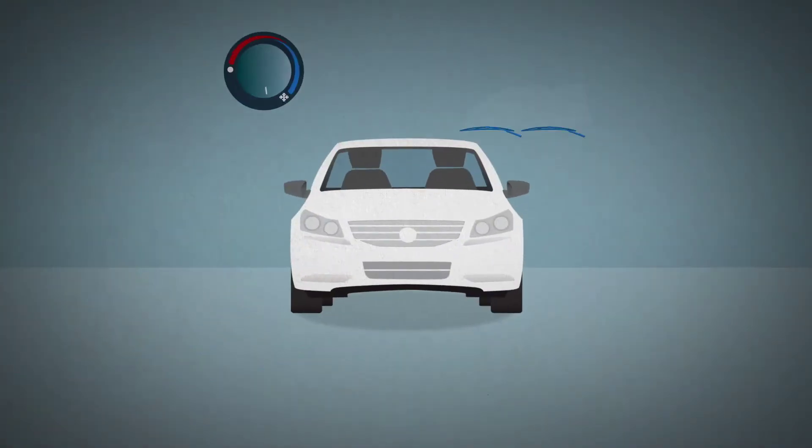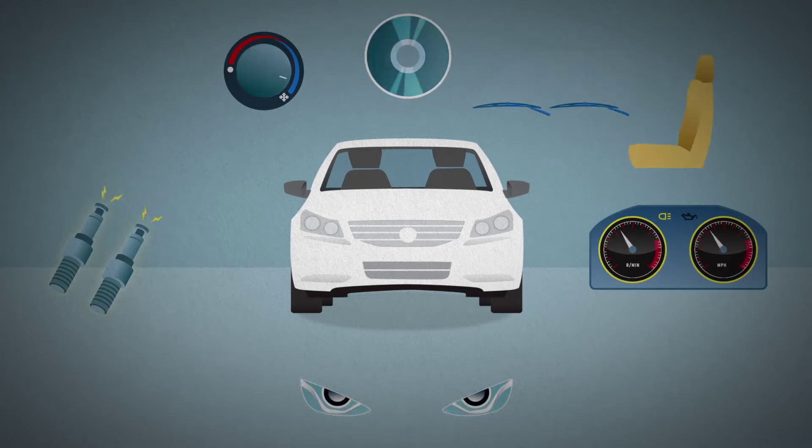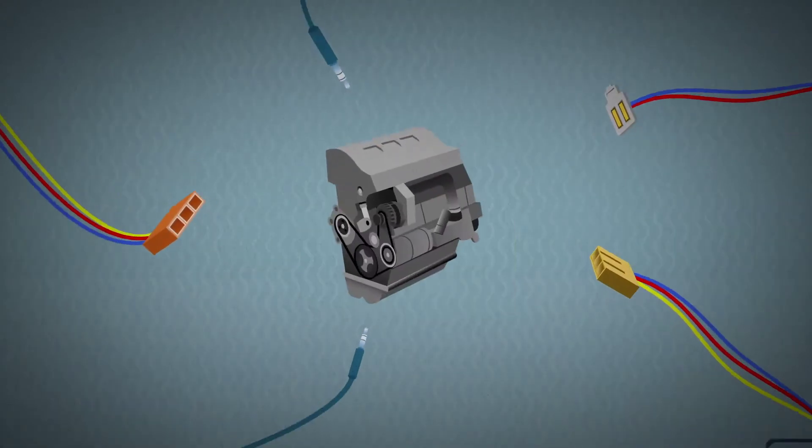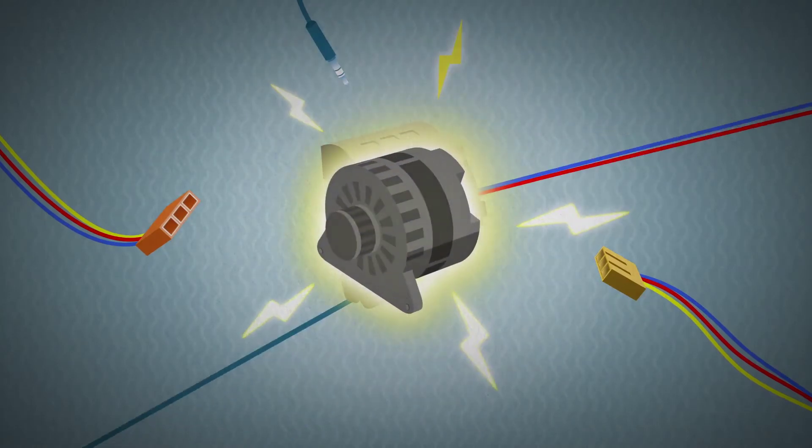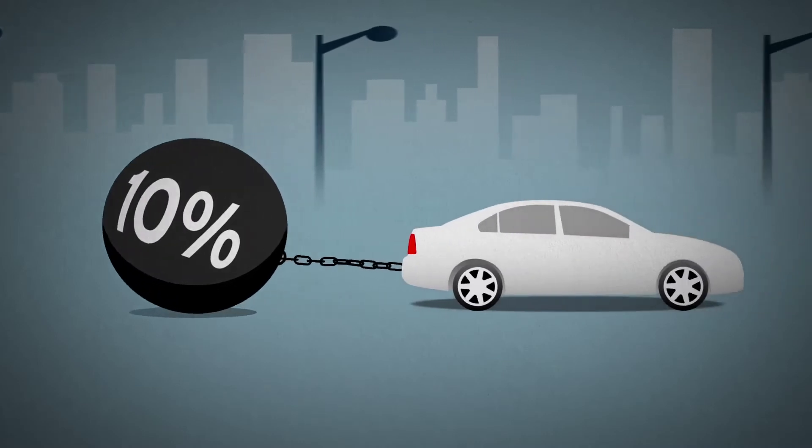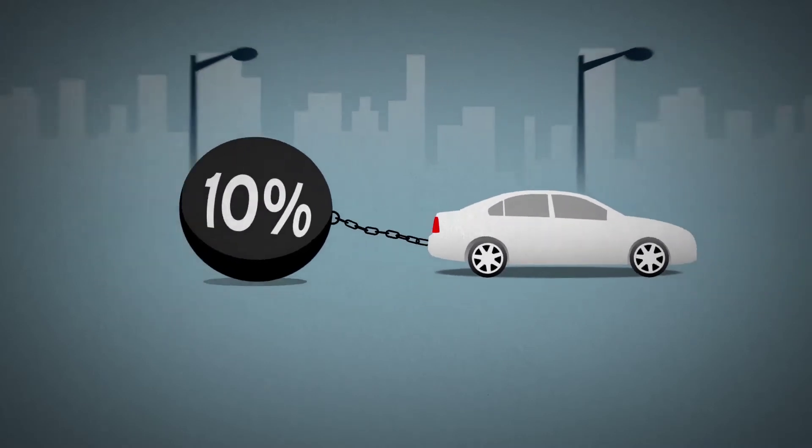Meanwhile, cars also use a lot of electricity to power everything from essentials to all the electronic gizmos that drivers demand today. They get this electricity from the alternator, which in most cars is constantly cranked by the engine, sapping up to 10% of your fuel and horsepower in everyday driving.